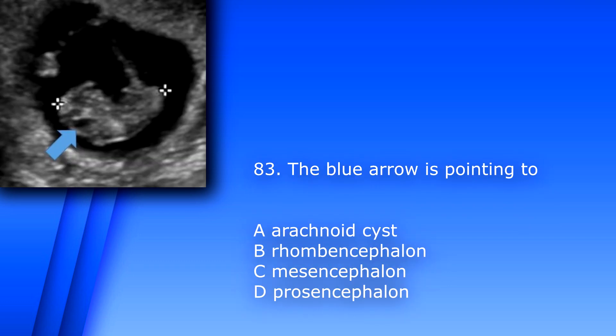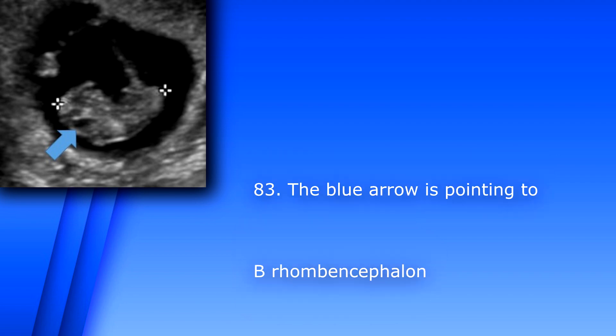Question 83. The blue arrow is pointing to? A. Arachnoid cyst. B. Rhombencephalon. C. Mesencephalon. D. Prosencephalon. The answer is B, rhombencephalon.